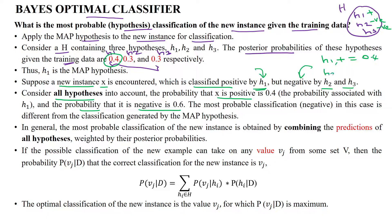H2 is negative with value 0.3, and H3 is also negative with value 0.3. Combining both: 0.3 plus 0.3 gives 0.6 for the negative class. So the data is classified as negative when considering all hypotheses together, whereas it is classified as positive when considering individual hypotheses alone.